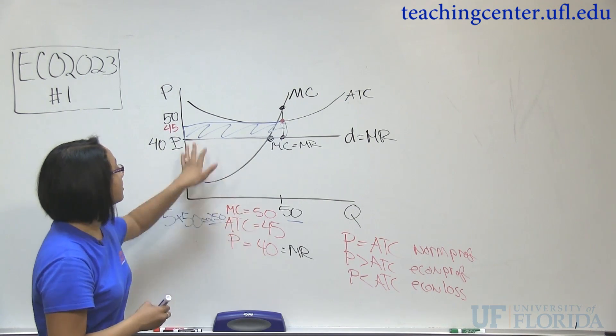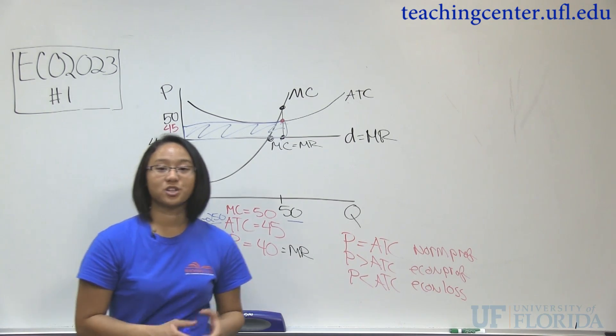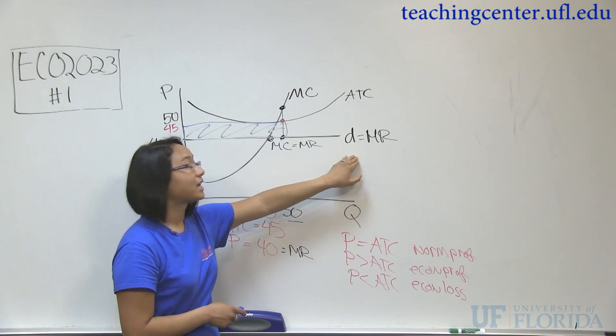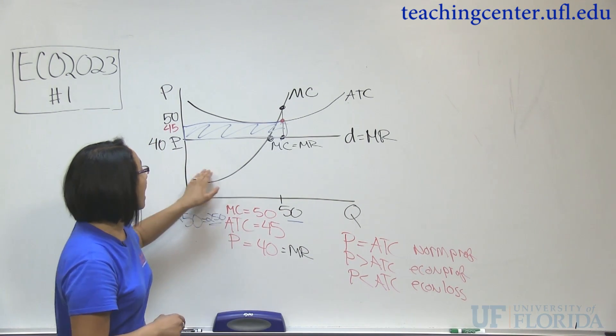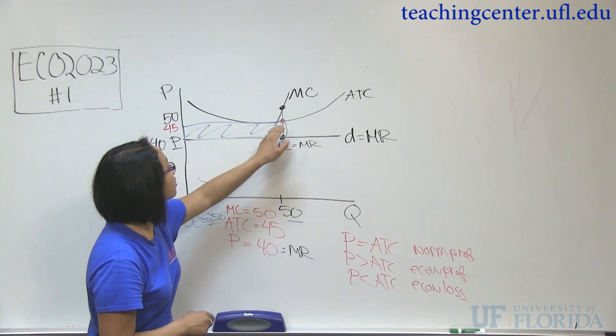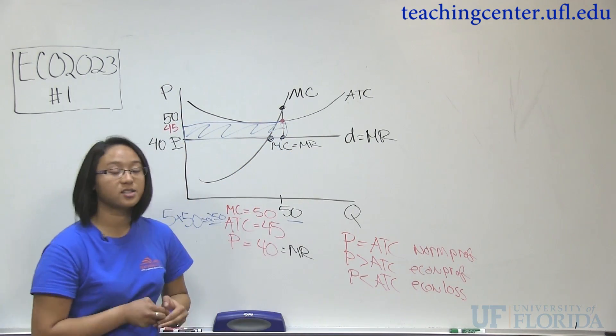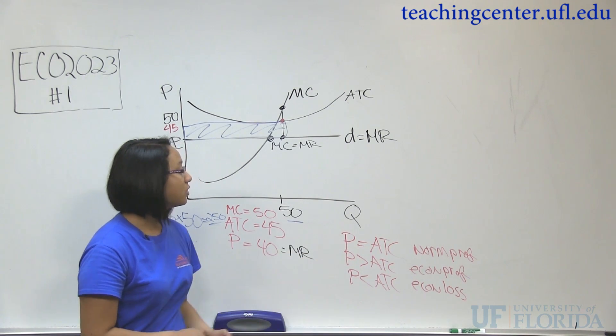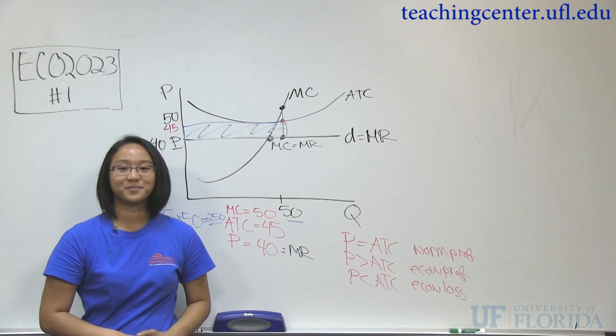So, you can do it graphically as well. So, whenever you do these perfectly competitive questions, go back to the graph. Know that demand is a flat curve and it equals our price. And know how our marginal cost curve is. And know how we use our average total cost. And you definitely want to know the three different ways you can earn a profit or loss. And that's how you solve a perfectly competitive firm.